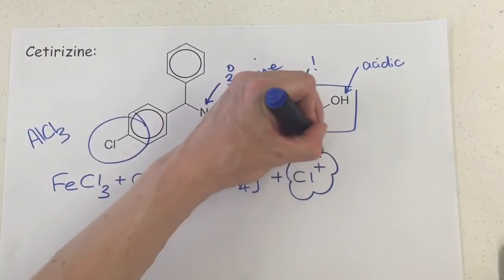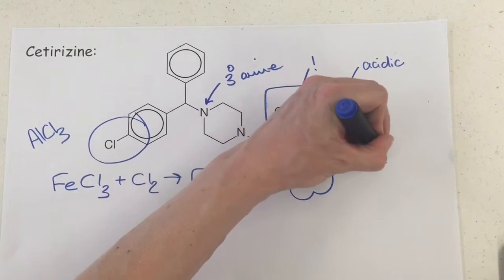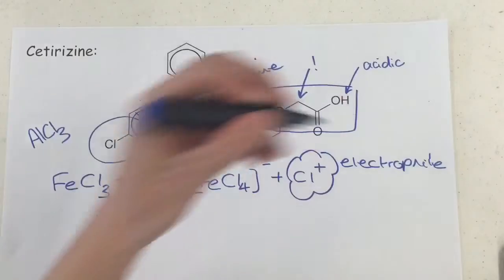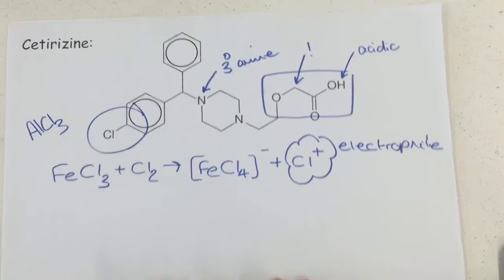Now the Cl+, that's kicked off on this side, is the electrophile and it's going to undergo electrophilic substitution with the benzene ring component.